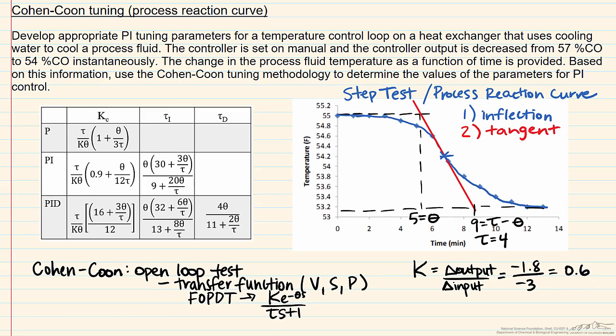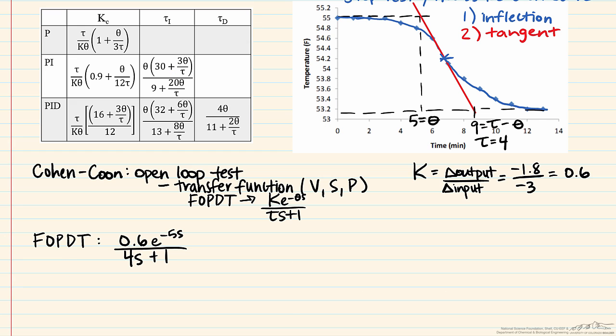So with all this information we have developed our FOPDT here as the gain, zero point six, e to the negative five s, the dead time, over four s plus one, where tau is four.